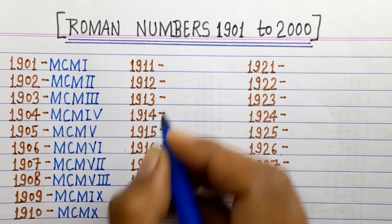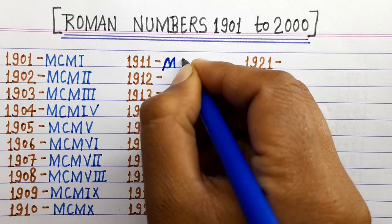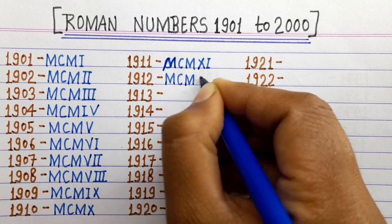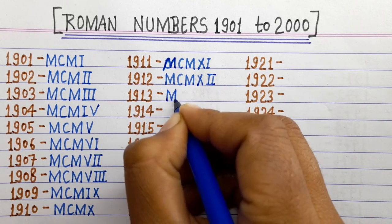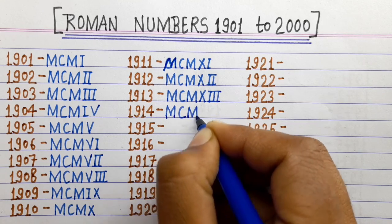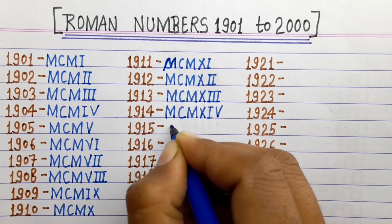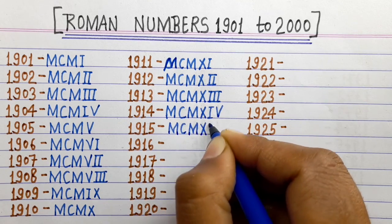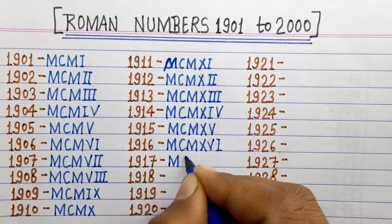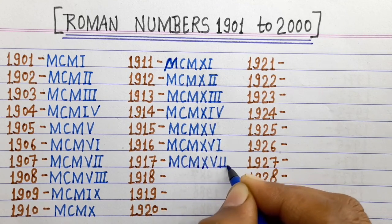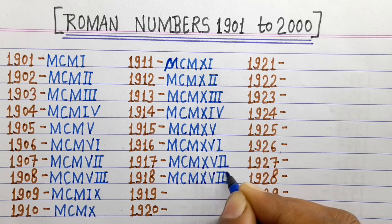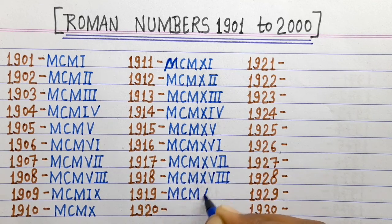1910 MCMX, 1911 MCMXI, 1912 MCMXII, 1913 MCMXIII, 1914 MCMXIV, 1915 MCMXV, 1916 MCMXVI, 1917 MCMXVII, 1919 MCMXIX.